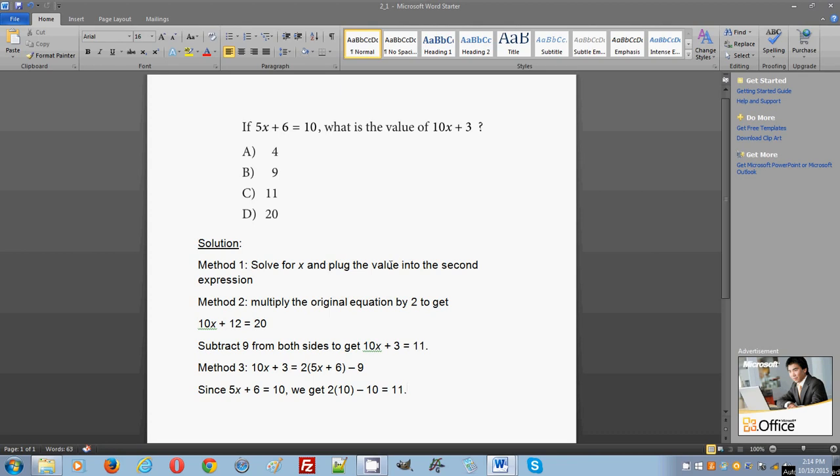If you solve for x, you're going to subtract 6 from both sides, you get 4 on the right side, then x will equal 4 over 5. With the value of 4/5 for x, you're going to plug it into the second expression and you're going to get 11 in this case.